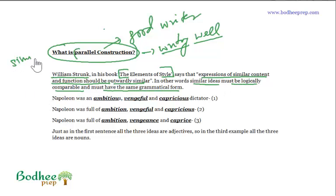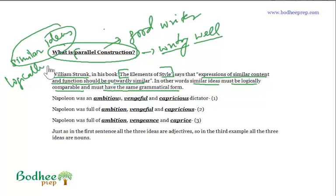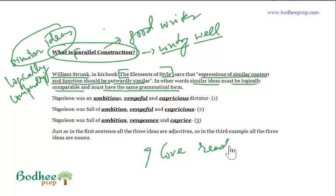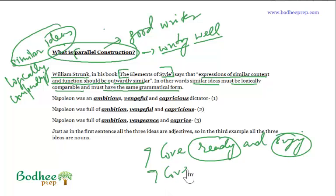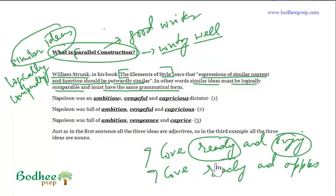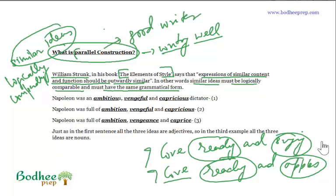Similar ideas must be logically comparable. Ideas can be similar only when they are logically comparable. So if you say 'I love reading books and singing songs,' that makes complete sense — you can love lots of things. But if you say 'I love reading and apples,' something is definitely wrong, because these two ideas are not comparable. You might say 'I love oranges and apples' or 'I love reading and cooking,' but you cannot compare reading with apples.